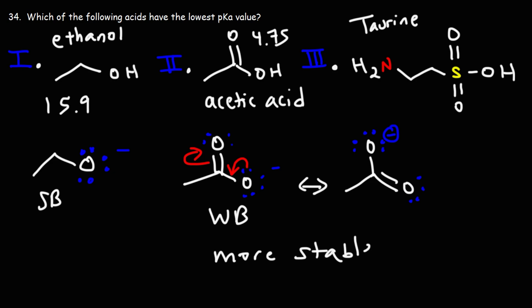Because the negative charge is shared among two oxygen atoms as opposed to one, we have a more stable situation — that's why it's called resonance stabilization of the conjugate base. The negative charge is spread out over a greater region of space. That's why acetic acid is more acidic than ethanol: due to the resonance stabilization and delocalization of electrons across those two oxygen atoms.